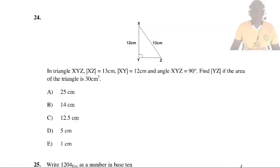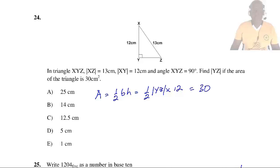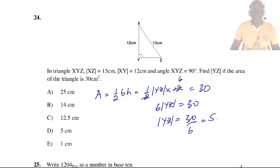Question 24: In triangle SYZ, |SZ| = 13 cm, |SY| = 12 cm, and angle SYZ = 90 degrees. Find |YZ| given that the area of the triangle is 30 cm². Area = ½ × |YZ| × height. The height is 12 cm: ½ × |YZ| × 12 = 30, so 6|YZ| = 30, therefore |YZ| = 5 cm. So the answer is D.